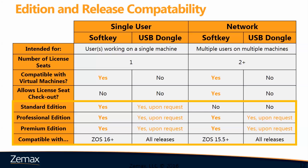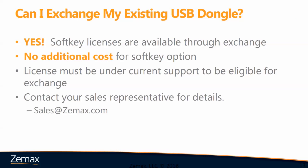Soft key will be our main form of license distribution for Optics Studio 16 moving forward. The network soft key was available starting in Optics Studio 15.5 and forward as well. Meanwhile, the USB dongle will remain accessible for all releases. You can exchange your existing USB dongle for a soft key license at no additional cost. The only condition is that your license must be under current support to be eligible for the exchange. For more information, you can contact your sales representative, or reach out to sales@zmax.com.